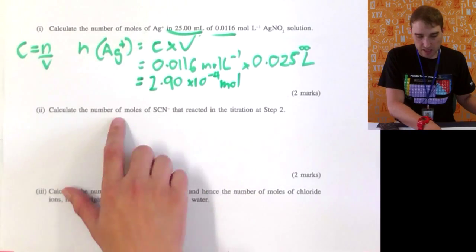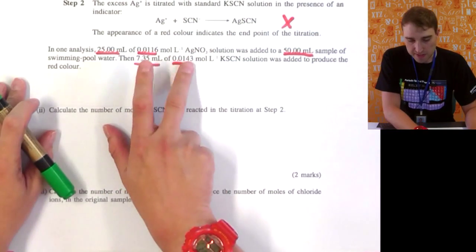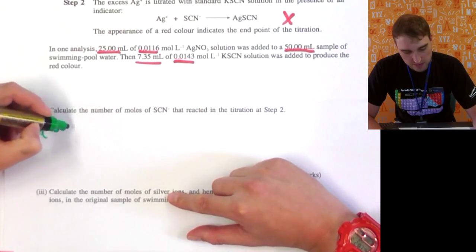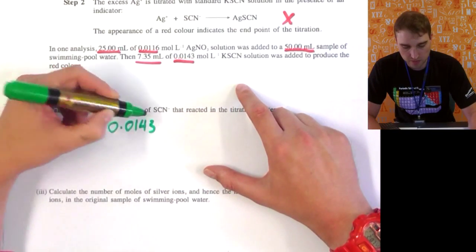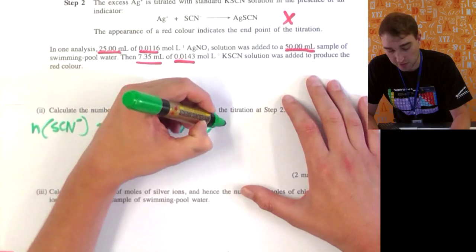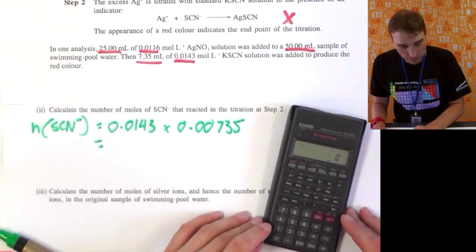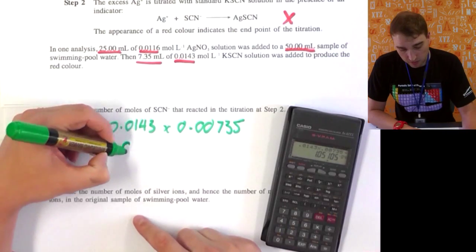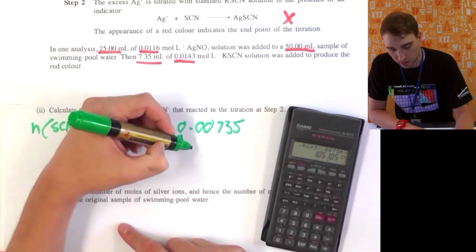Next part: calculate the number of moles of SCN⁻ ions that reacted in the titration at step 2. The number of moles of SCN⁻ equals concentration times volume: 0.0143 mol/L times 0.00735 L. Putting that in the calculator gives 1.05 × 10⁻⁴ moles, to three significant figures.